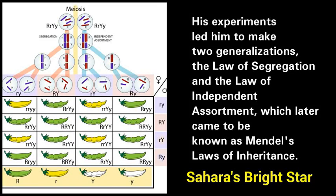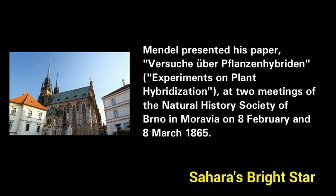His experiments led him to make two generalizations — the law of segregation and the law of independent assortment — which later came to be known as Mendel's Laws of Inheritance. Mendel presented his paper, 'Versuche über Pflanzenhybriden' (Experiments on Plant Hybridization), at two meetings of the Natural History Society of Brno in Moravia on 8 February and 8 March 1865.